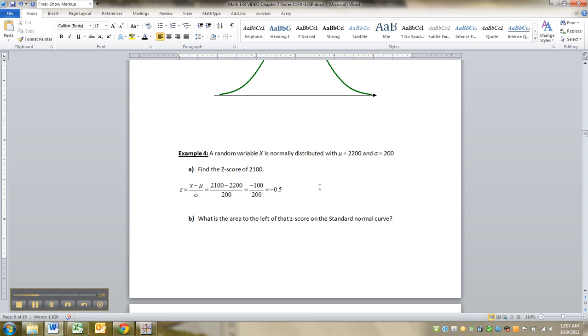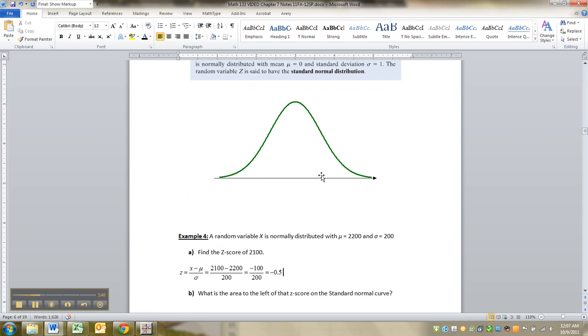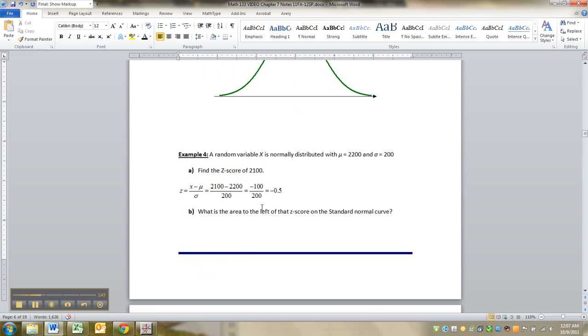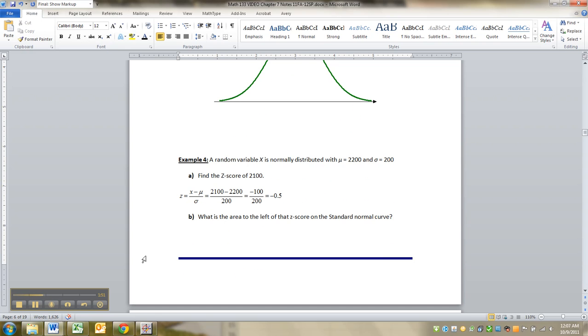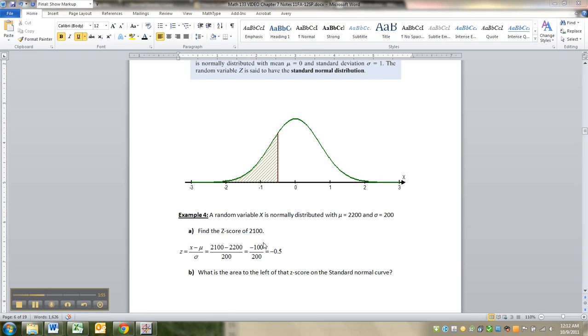Now, take a wild guess. What's the area to the left of that Z-score on a standard normal curve? So if you had a standard normal curve, pretend this was one, then where would that Z-score fall, and what would be the area? Well, let me go draw it for you. Hold on. All right, there it is. I just drew it with my program. So here's the negative 0.5, and then there's the area to the left. And so the question is, what do you think the area is to that left?